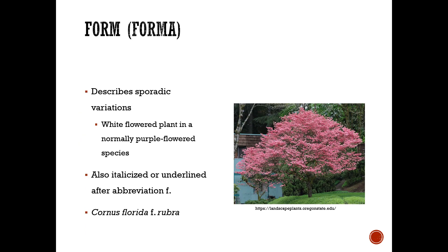Form or forma describes sporadic variations — for instance, a white-flowered plant in a normally purple-flowered species. It is also italicized or underlined, following the abbreviation F. For example, Cornus florida forma rubra is the pink flowering dogwood.